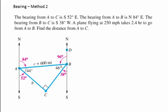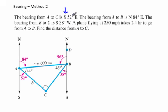Let's take a look at method two. Notice how the angles are labeled differently — we're no longer working with an angle measured clockwise from north. We're now given two directions and an angle measure. For example, south 52 degrees east means we start at a point, look south, and then rotate 52 degrees toward east. That puts us on the path from A to C.